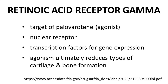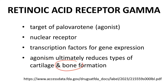Palaveratine's mechanism of action is agonism of retinoic acid receptor gamma, a nuclear receptor. Nuclear receptors are considered transcription factors for gene expression, so ligands for nuclear receptors, including retinoic acid receptor gamma, can have broad and powerful effects. Without going into all the pathways, palaveratine, through its agonism of retinoic acid receptor gamma, suppresses the formation of cartilage and bone.